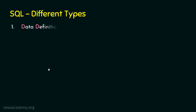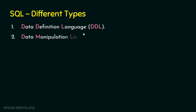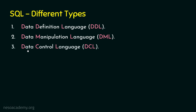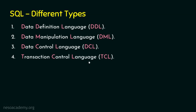Let's now see the various types, or sub-languages, of SQL. The first is DDL — Data Definition Language. The second is DML — Data Manipulation Language. The third is DCL — Data Control Language. And the last is TCL — Transaction Control Language. In the coming lectures we will see each of these in detail.